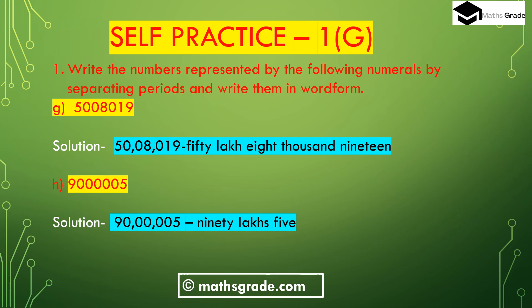Part (g): the number is 5008019. We have to write it using periods and in word form. In the Indian system of numeration, starting from the right we place 3 digits in the hundreds place — 019 — then comma, then 08 in the thousands place, then 50 in the lakh place. So in word form the number is 50 lakh 8 thousand 19.